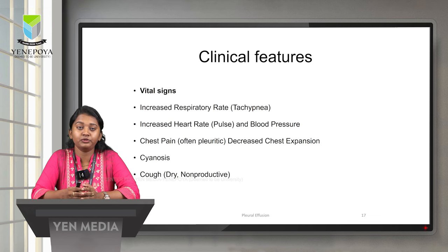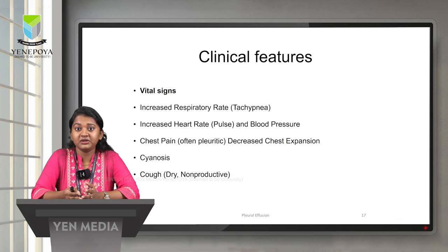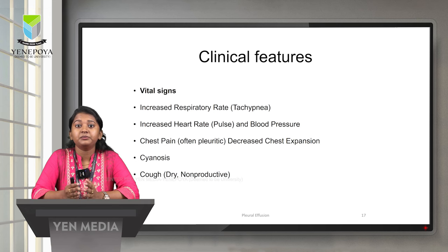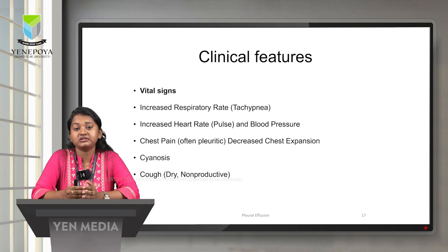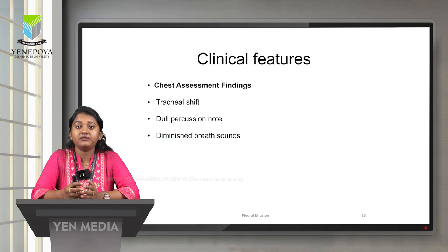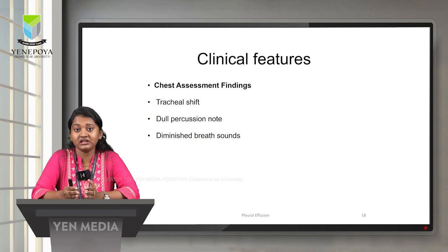The clinical features of pleural effusion include increased respiratory rate, that is tachypnea, due to stimulation of peripheral chemoreceptors, which can also lead to hypoxemia, and the patient will have increased heart rate and blood pressure. The patient will have pleuritic chest pain and decreased chest expansion. The patient will also present with cyanosis — a bluish discoloration of the skin — and a dry, non-productive cough. On chest assessment, we can identify tracheal shift; on percussion there will be a dull note due to fluid; and diminished breath sounds on auscultation.